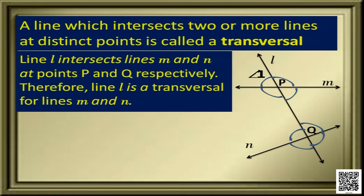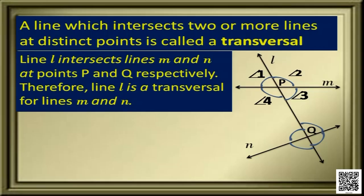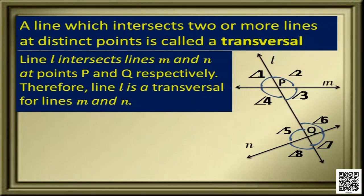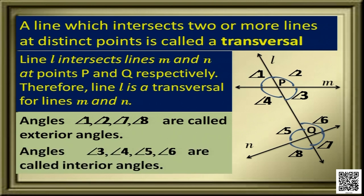What are the angles and how do we name them? We name them angle 1, angle 2, angle 3, angle 4, angle 5, angle 6, angle 7, and angle 8. This naming makes it easier to identify the angles. Angles 1, 2, 7, and 8 are called exterior angles. In between lines M and N we have four angles — 3, 4, 5, and 6 — and these four angles are called interior angles.